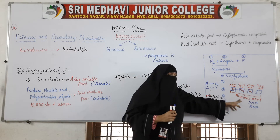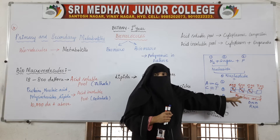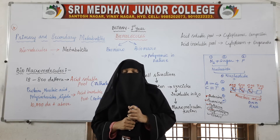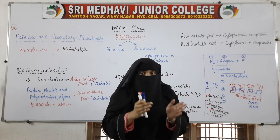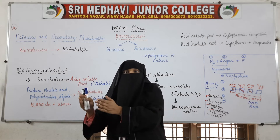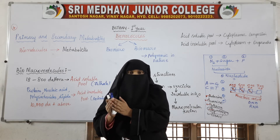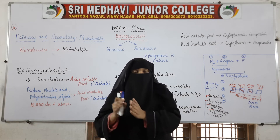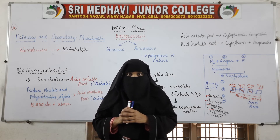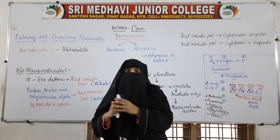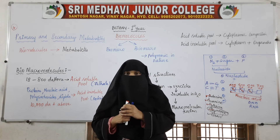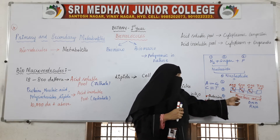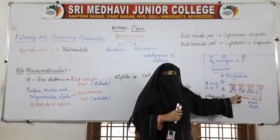Both DNA and RNA are nucleic acids — polymers of nucleotides. Just as amino acids join together to form proteins, and monosaccharides join together to form polysaccharides, nucleotides join together and form nucleic acid.